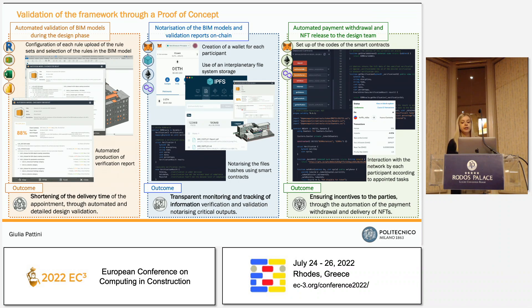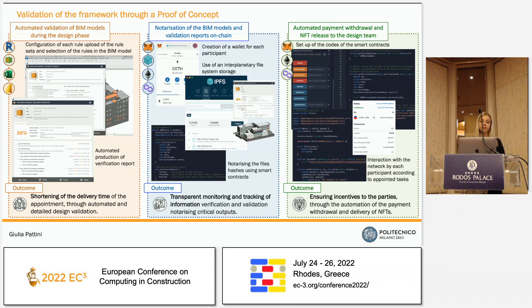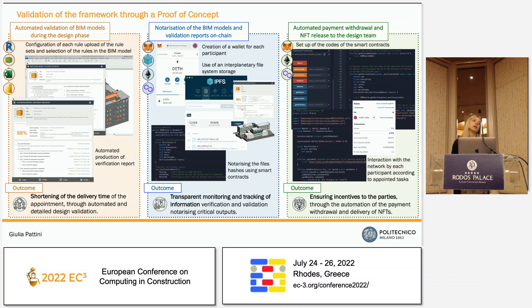The validation of the research framework is made practical by means of a proof of concept using an actual real estate digitalization project requested by a specific client. The three phases allow responses to the research questions: the automated validation of BIM models through rule sets shortens delivery time; the authorization of BIM models and validation reports on-chain using enterprise storage and smart contracts allows transparent monitoring and tracking of information; and the automated payment withdrawal and NFT release using smart contracts assures incentives to the design team through automated payment withdrawal upon successful completion and delivery of NFTs.